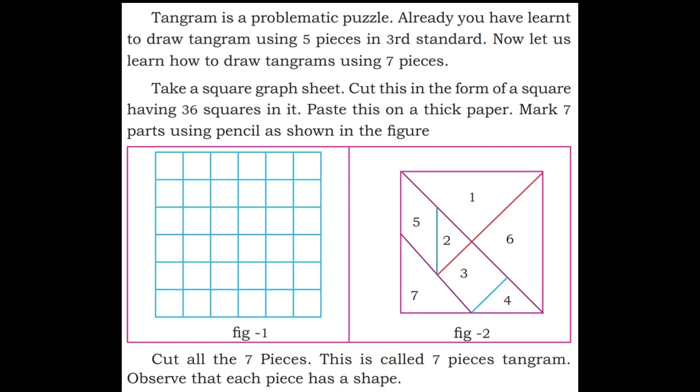Cut this in the form of a square having 36 squares in it. Paste this on a thick paper. Mark 7 parts using a pencil as shown in the figure. The graph sheet has 36 squares. Mark 7 parts using a pencil as shown in the figure.